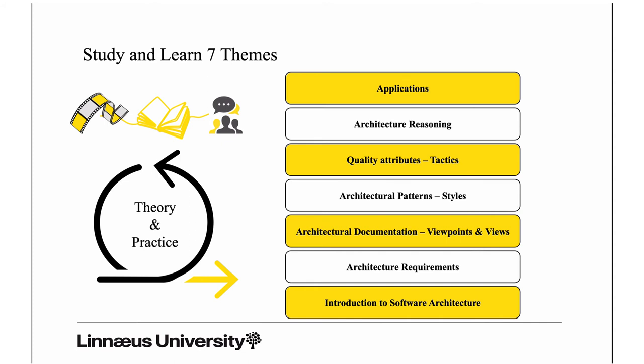Since we're flipping the classroom, the course is divided into seven different themes. We start with an introduction, then cover architectural requirements, architectural documentation, patterns, tactics, reasoning, and finally various applications of software architecture. Each theme combines theory and practice — you'll be asked to read chapters in the book, and we provide study instructions, study questions, recorded lessons, and tutoring sessions where you can meet course staff and other students to get answers and discuss.